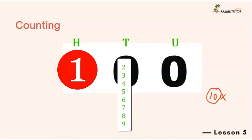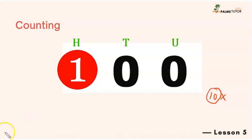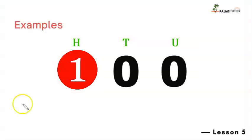Instead of having ten tens, we move to the next bundle, and that is one hundred. You can see how that works — we have one hundred, no tens, and no units. This can also keep increasing from one hundred to two to three to four, right up to nine hundred, and that takes us to the next bundle we'll talk about next class.